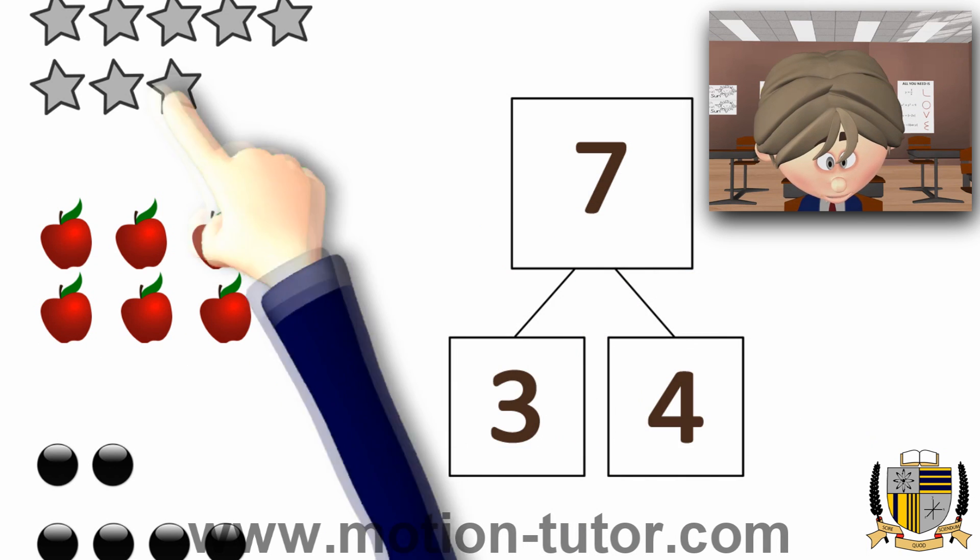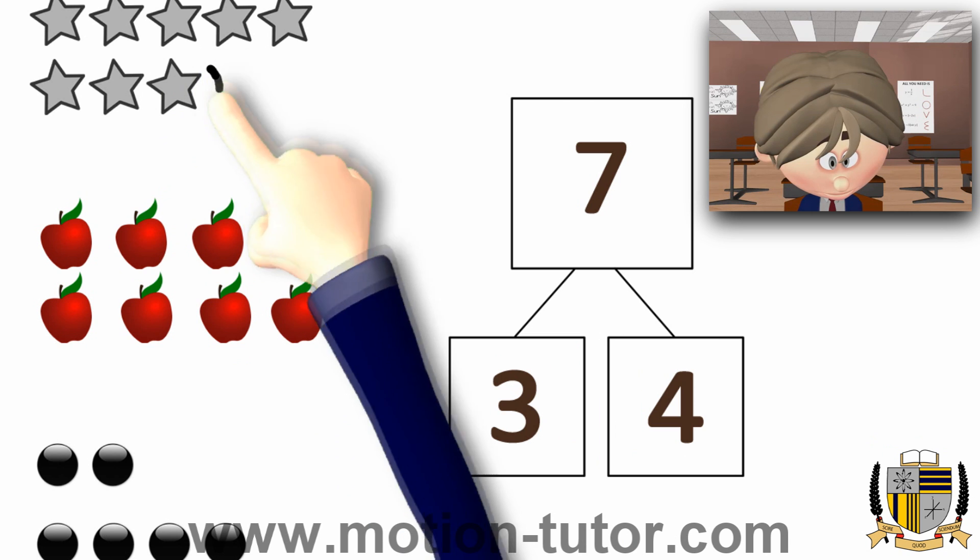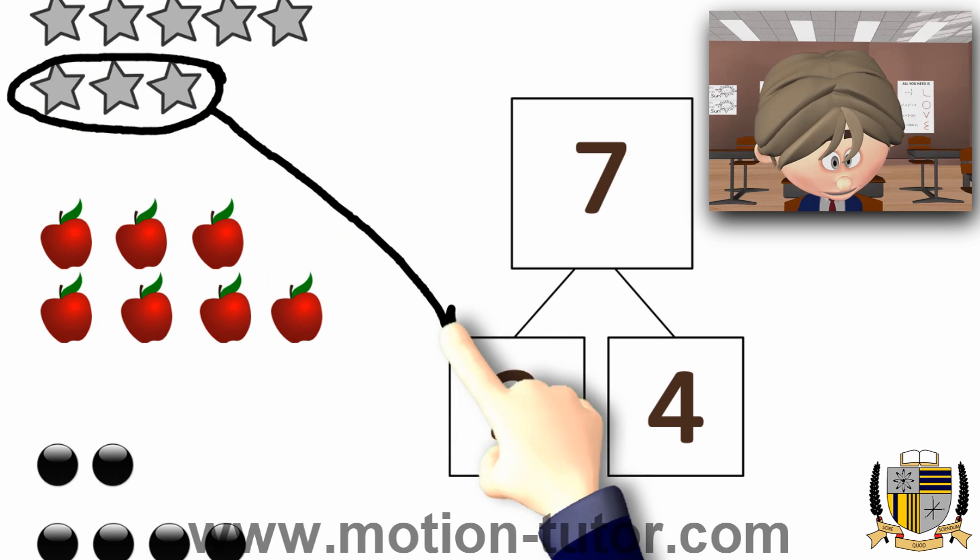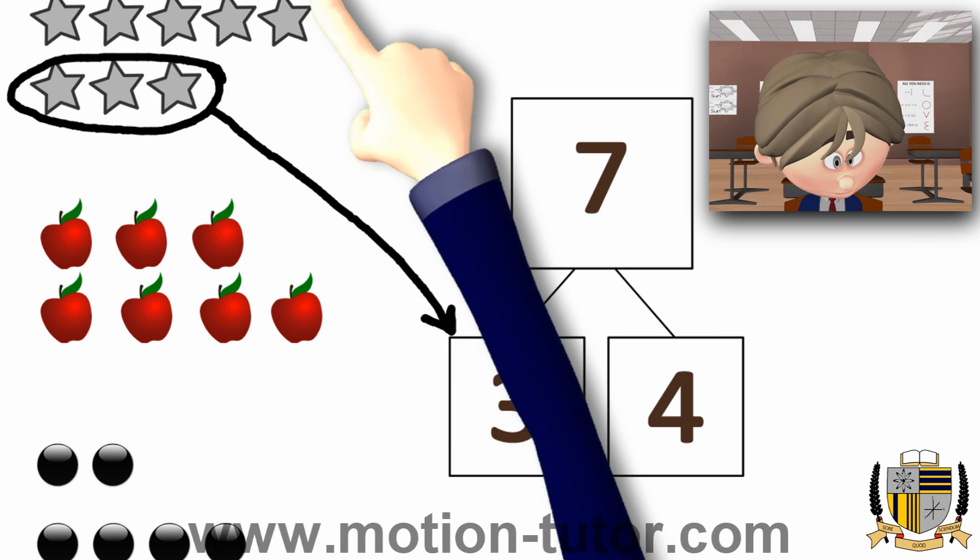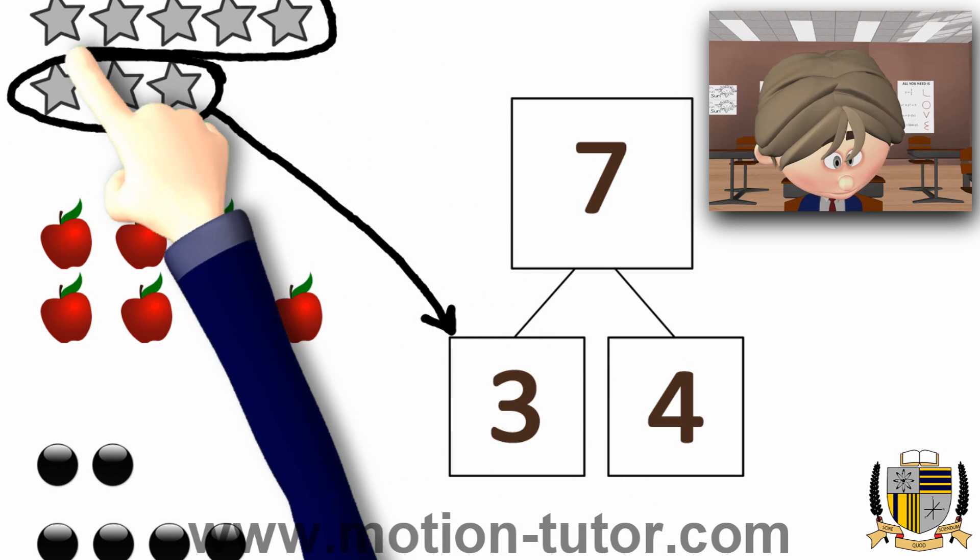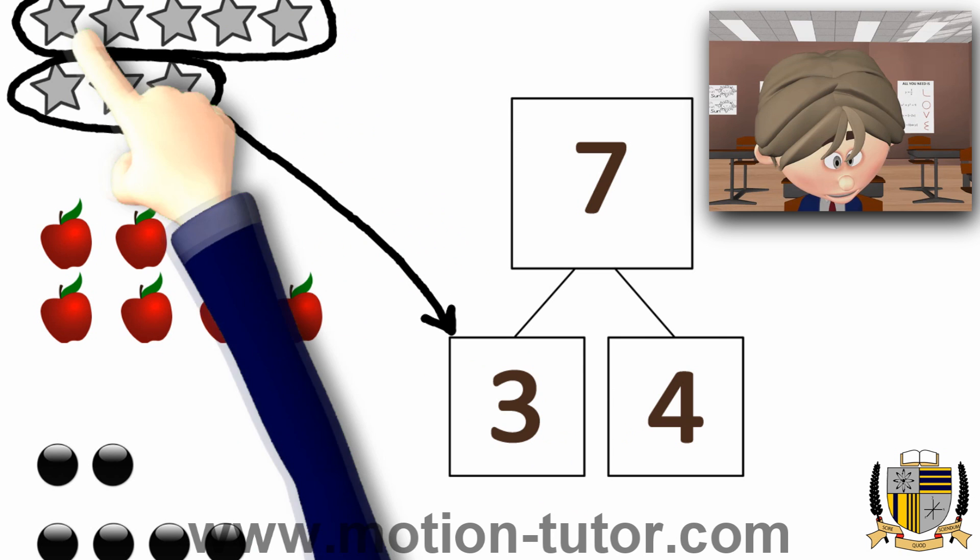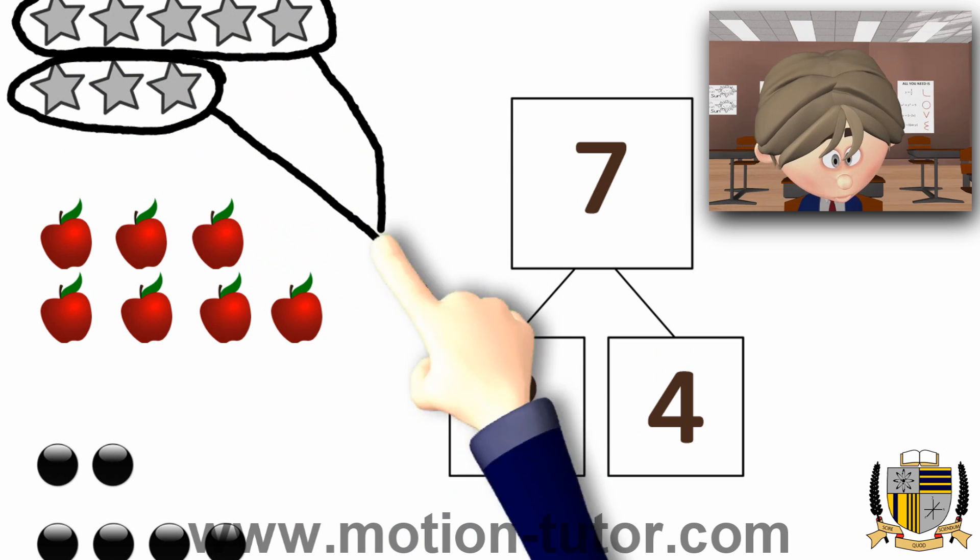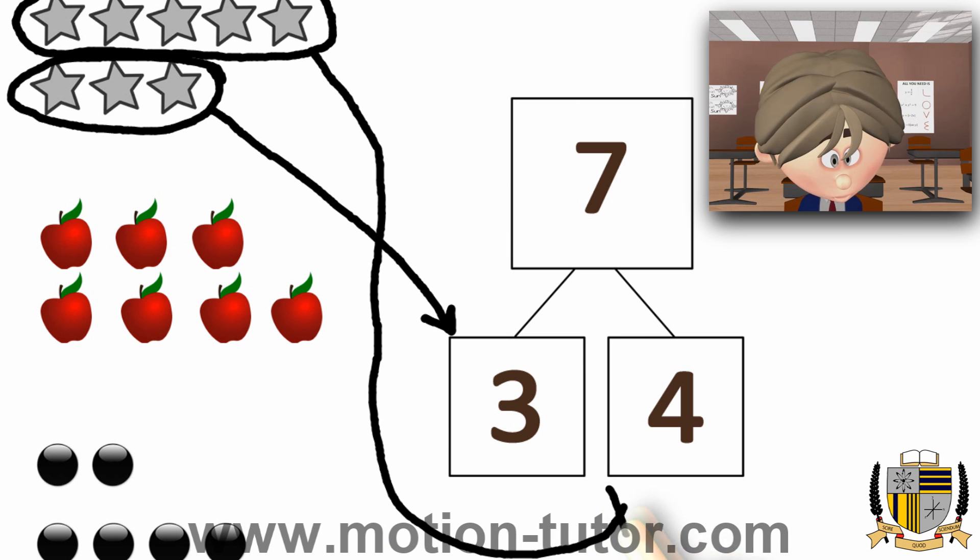This one's wrong, because here's 3. Okay, yeah. That's correct so far. But this is 5. 1, 2, 3, 4, 5. And that does not match. Does not match with that 4.